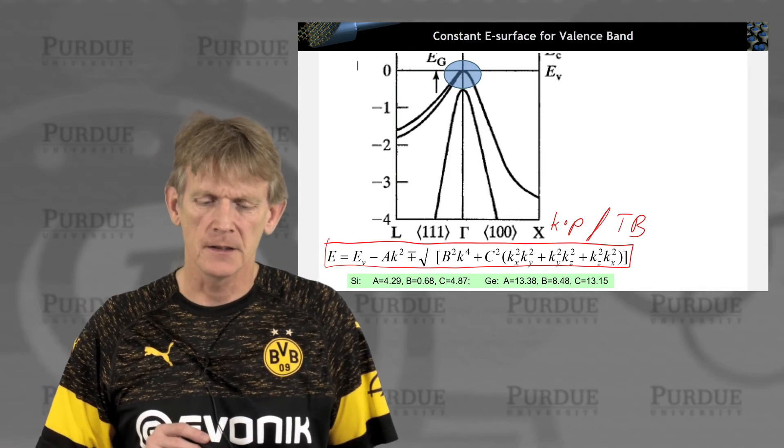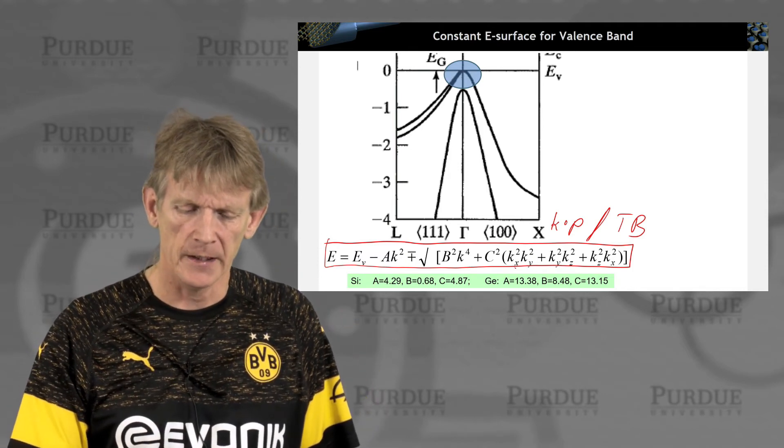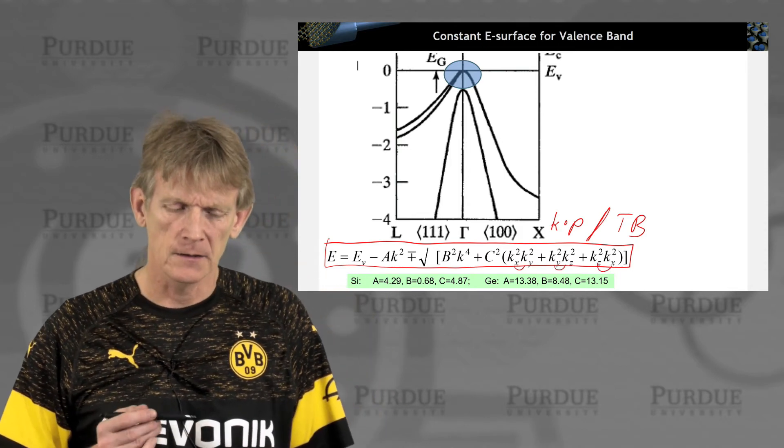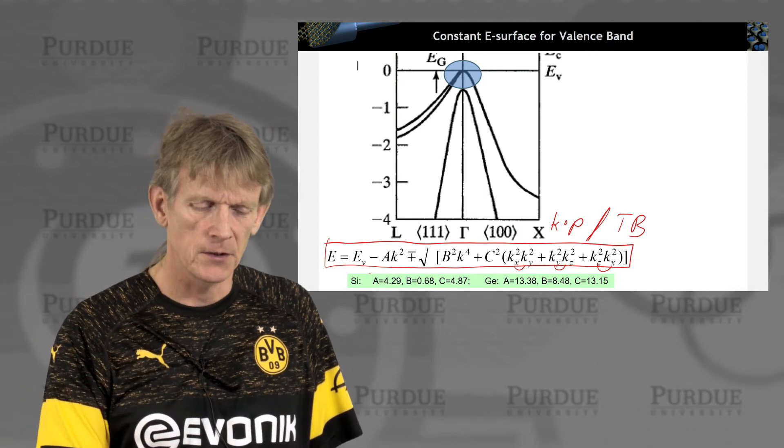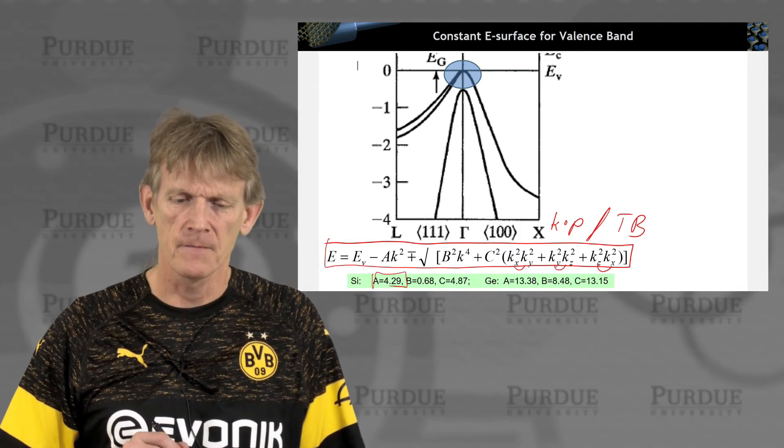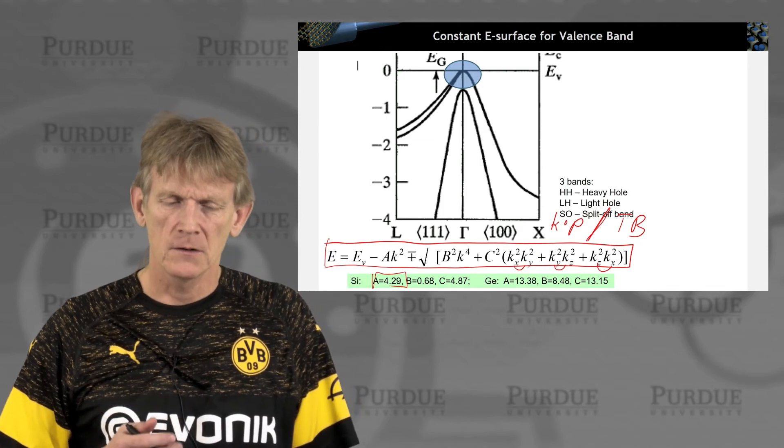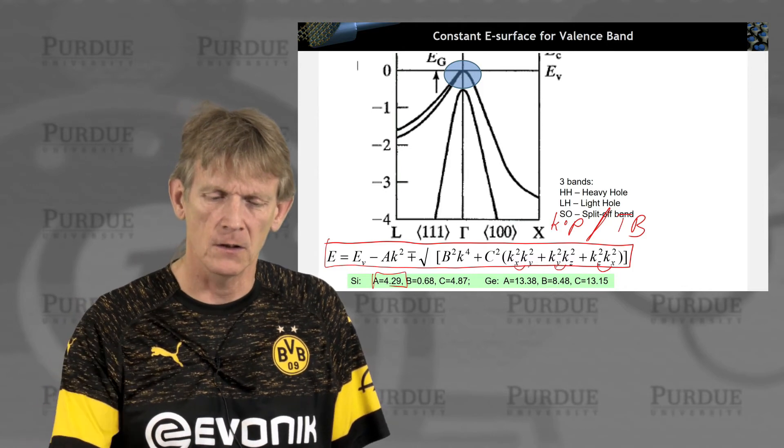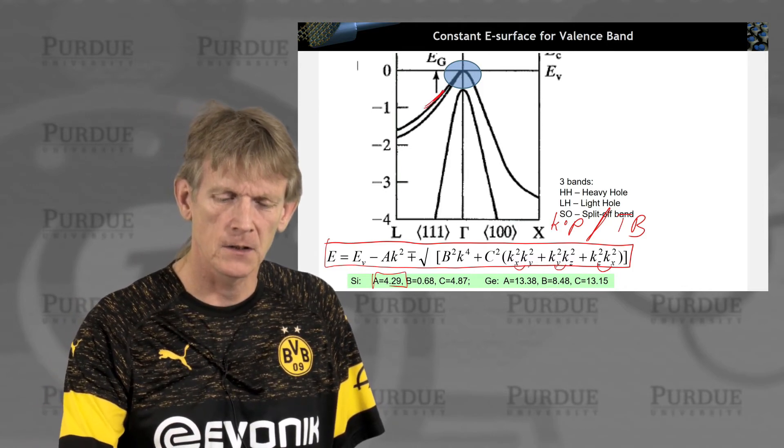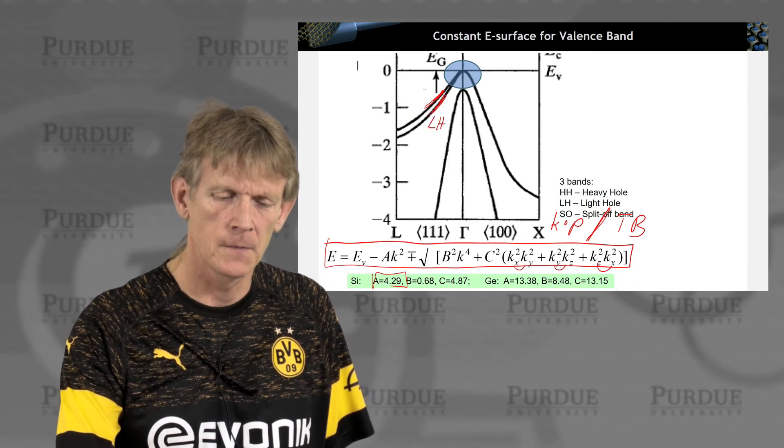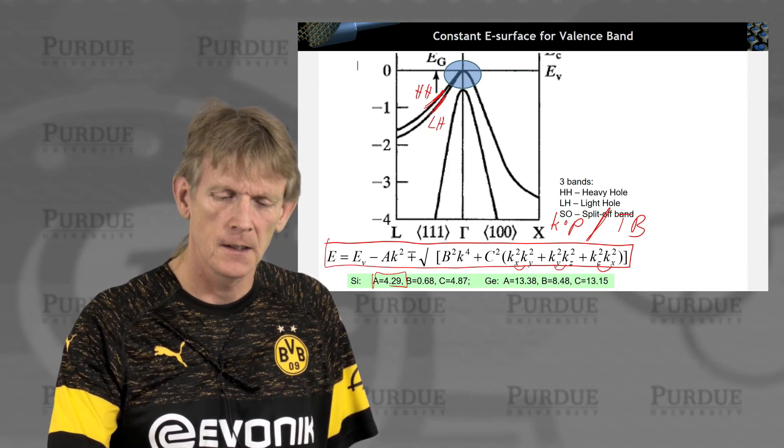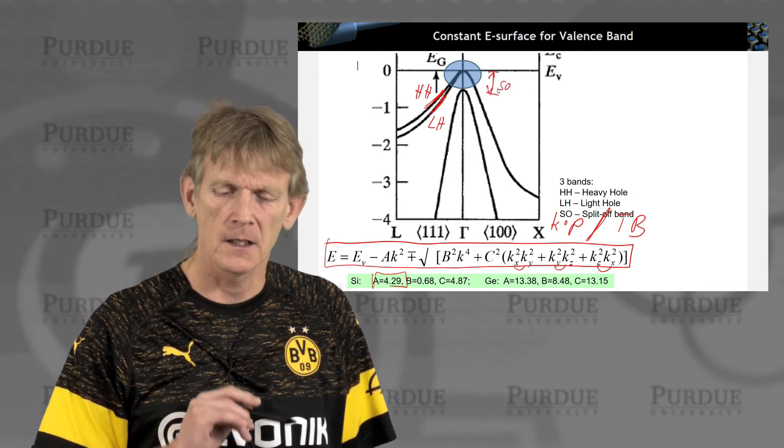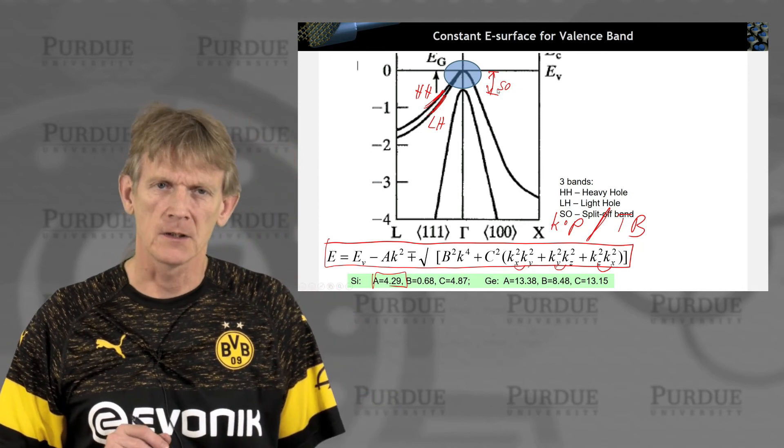But any of these materials, you will expand them in a form of a constant energy surface like this. This is typically done with something called a K dot P method. You can do similar things with a tight binding method. And what you end up having is dispersions that couple x and y, y and z, and z and x. So, these are rather complicated dispersions. The materials have their own coefficients a, b, and c. And the take home message you want to have here is that there's three bands. There's something called a heavy hole band here. There's a light hole band here. And as I mentioned before, there is a split off band that is in energy further away from the heavy and the light hole band.